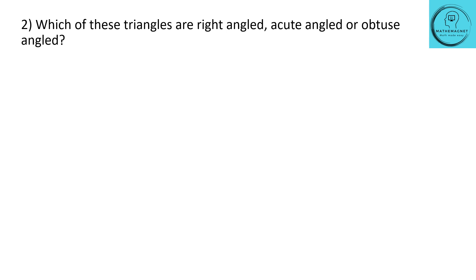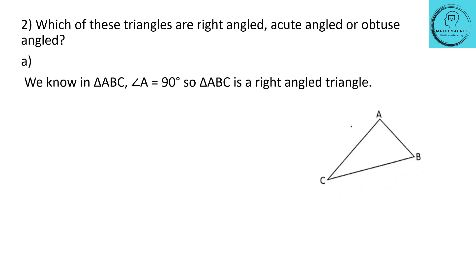Question 2: which of these triangles are right-angled, acute-angled, or obtuse-angled? In A, they have given us triangle ABC. It is clearly evident that angle A is a right angle, that is 90 degrees. So in triangle ABC, angle A is 90 degrees, and therefore triangle ABC is a right-angled triangle.